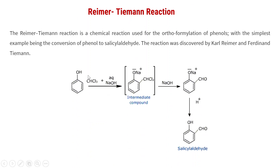In the overall reaction, we have a benzene ring with OH connected — meaning this is phenol. And this one is chloroform, CCl3. In the presence of aqueous NaOH, which is a base, phenol reacts with chloroform in the presence of aqueous NaOH.